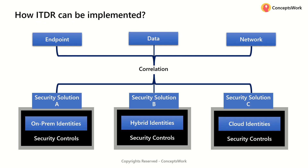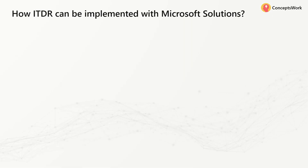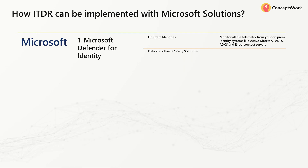Now let's talk about how ITDR can be implemented with Microsoft solutions. First, you need to make sure the on-premises part is protected, because that's where everything starts. You need to implement Microsoft Defender for Identity, which observes everything happening in your on-premises environment using sensors, cloud services, and more. Recently, with the help of Microsoft Defender for Cloud Apps, insights from other identity providers can also be correlated.